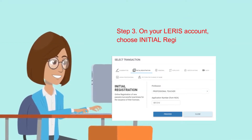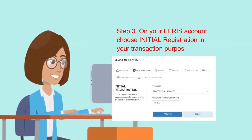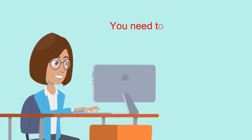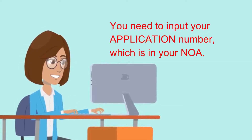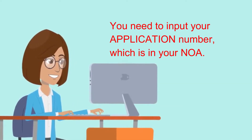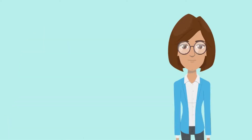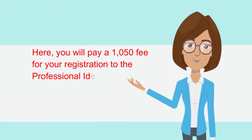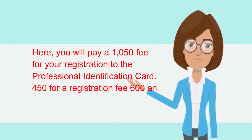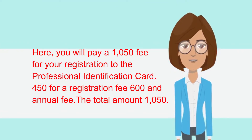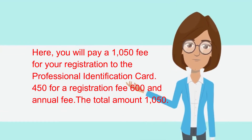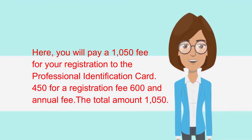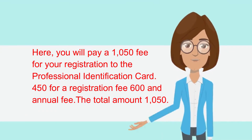Step 3. On your LERIS account, choose initial registration in your transaction purpose. You need to input your application number, which is in your NOA. You will pay a 1,050 peso fee for your registration to the professional identification card: 450 pesos for a registration fee and 600 pesos as an annual fee, for a total amount of 1,050 pesos.